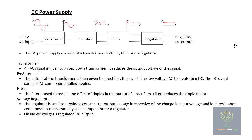So basically this is the DC power supply. It consists of basic blocks: transformer, rectifier, filter, and regulator. The transformer steps down the AC voltage, the rectifier converts the AC into pulsating DC, the filter reduces the ripple effect of the pulsating DC, and the regulator produces a regulated DC output with a constant output value.